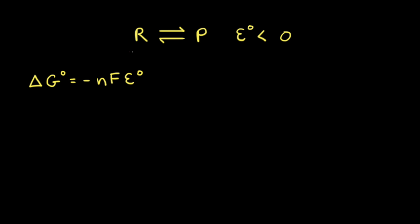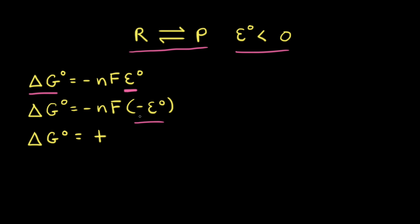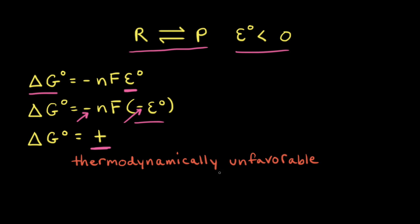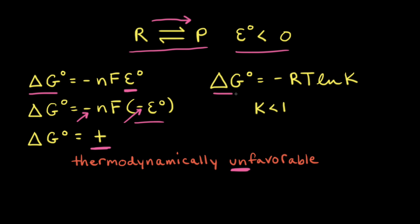Now let's think about a generic redox reaction where the standard potential is negative, i.e., E° < 0. If we plug in a negative voltage, the two negative signs in the equation give a positive value for ΔG°. A positive ΔG° means the forward reaction is thermodynamically unfavorable, and plugging that into the equilibrium expression gives K < 1. When K is less than 1, there will be more reactants than products at equilibrium.